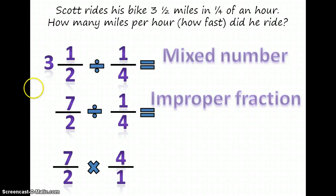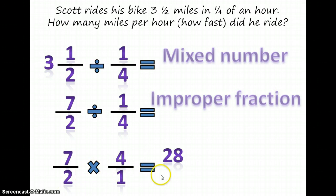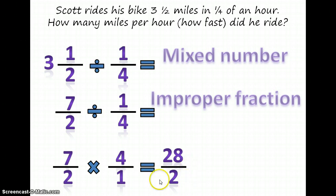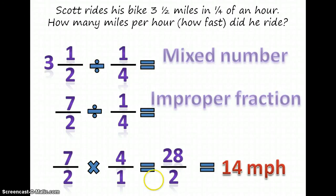We multiply across the top first, so seven times four is equal to 28, and then two times one is equal to two. But this isn't in its simplest form, so if we divide both the numerator and denominator by two, we'll have 14 over one, which is the same as 14. We're trying to find out how many miles per hour he rode, so don't forget to label and put on miles per hour — and then you've solved the problem.